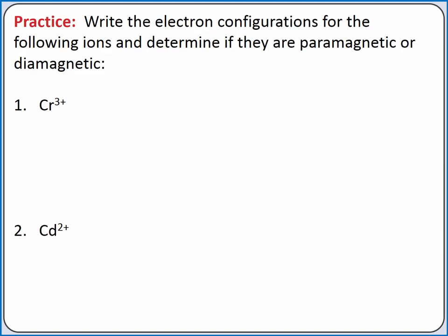Let's practice by writing the electron configuration for these two ions and determining if they are paramagnetic or diamagnetic. To get the electron configuration for chromium 3+, let's start with the electron configuration for just chromium. It is argon 4s1 3d5.